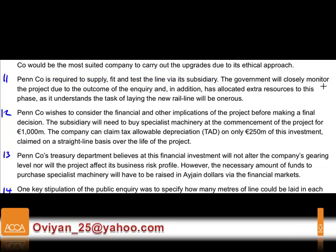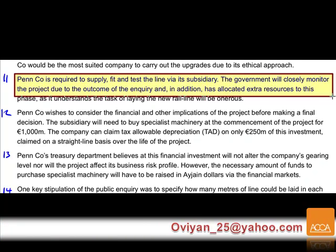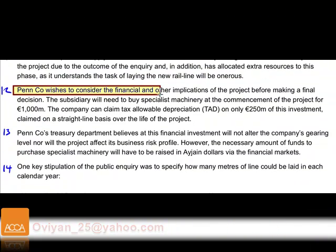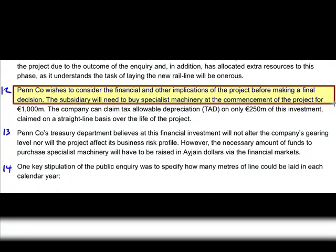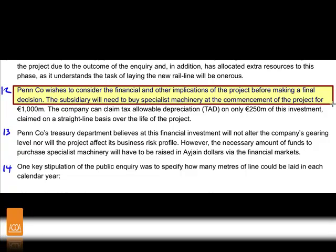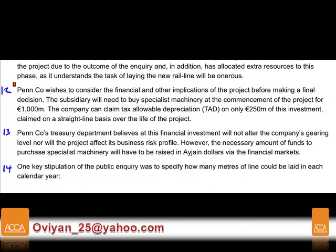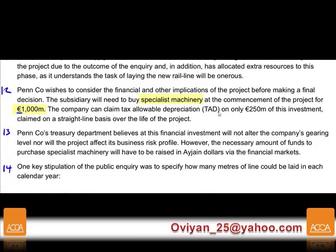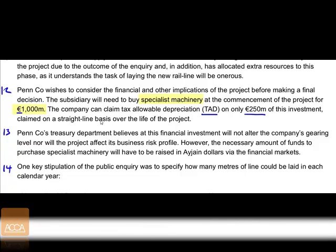Penn is required to supply, fit, and test the line via its subsidiary. The government will closely monitor the project and has allocated extra resources. Penn wishes to consider the financial and other implications before making a final decision. The subsidiary will need to buy specialised machinery at project commencement — costing one million euro dollars. The company can claim tax-allowable depreciation (TAD) on only 250,000, with 750,000 non-claimable, on a straight-line basis over the five-year project life, giving TAD of 50 per annum.